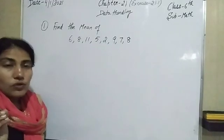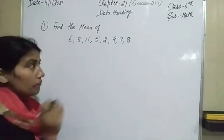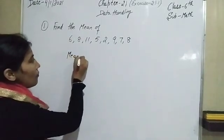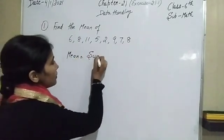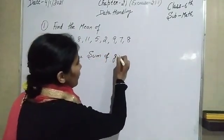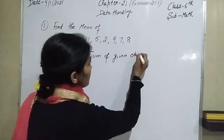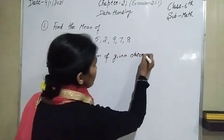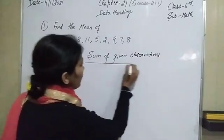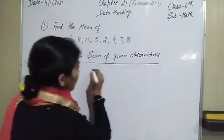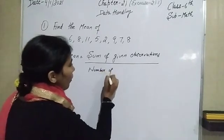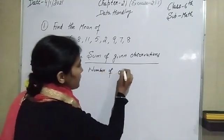Firstly I'm going to write down the formula for finding the mean. Mean is equal to the sum of the given observations divided by the number of observations.